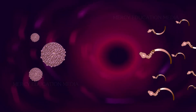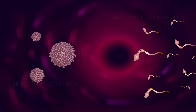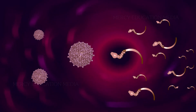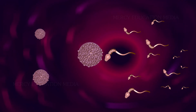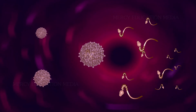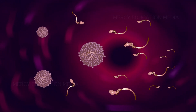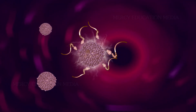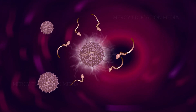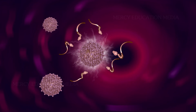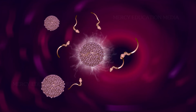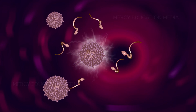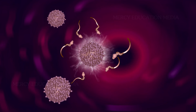Once a spermatozoan pierces the egg membrane, the zona pellucida, and enters the ovum, polyspermy — that is the entry of more than one sperm — is avoided by the formation of a fertilization membrane around the ovum.